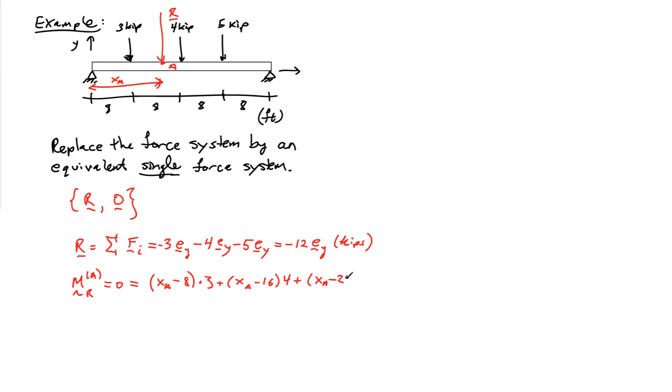Plus the lever arm to the third force, which is located at 24 feet, times the value of the third force. And so this tells me then that 12 times XA minus 208 needs to be equal to 0. So if I solve that.